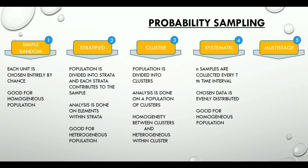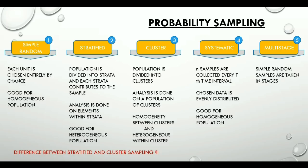The last one is multi-stage sampling, where simple random samples are collected in stages. It is important to quickly differentiate the key factor in stratified and cluster sampling: in stratified, analysis is done within the strata, whereas in cluster sampling, analysis is done on a population of clusters.